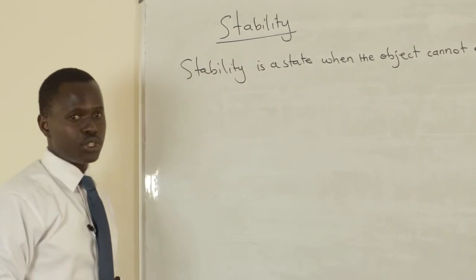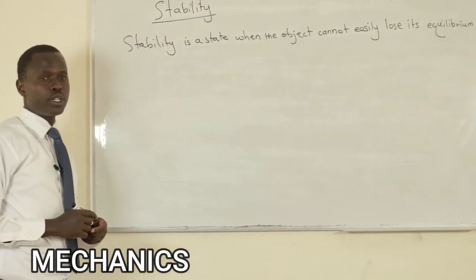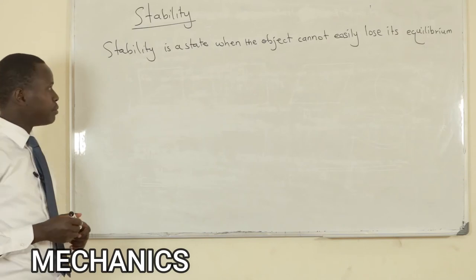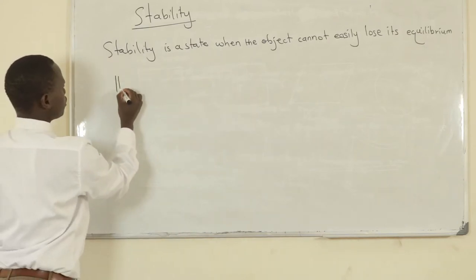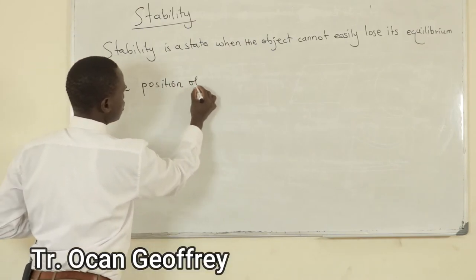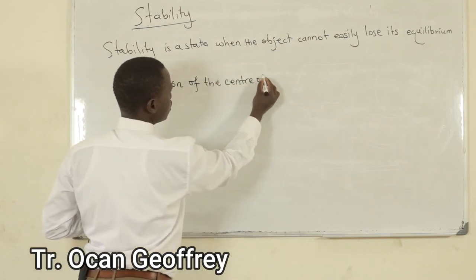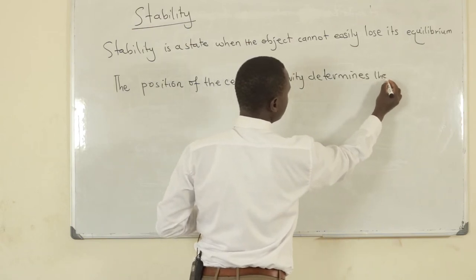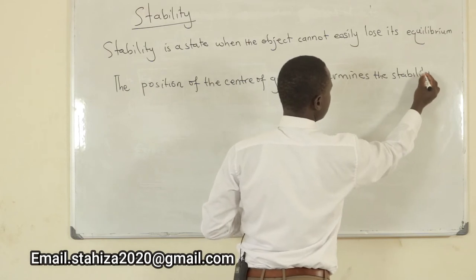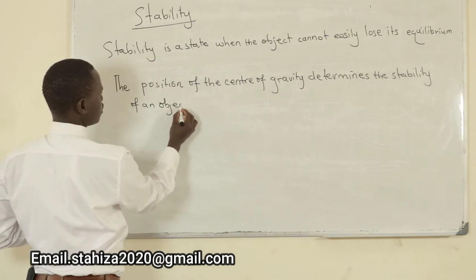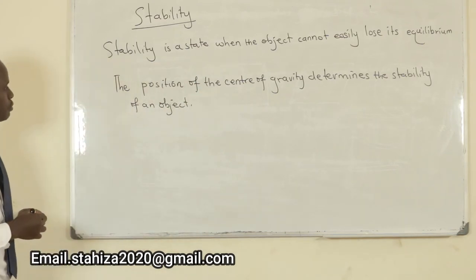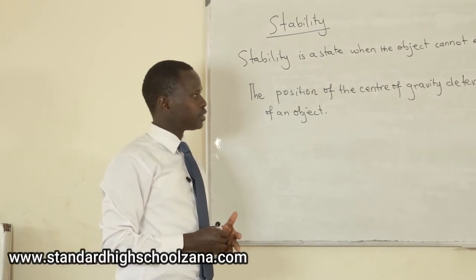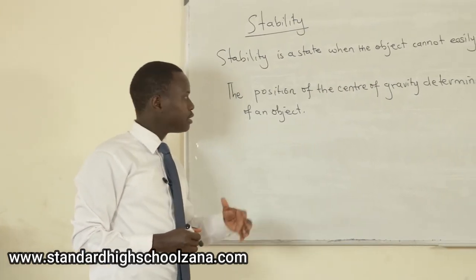We say that the position of the center of gravity determines the stability of an object. The lower the center of gravity, the more stable the object will be.